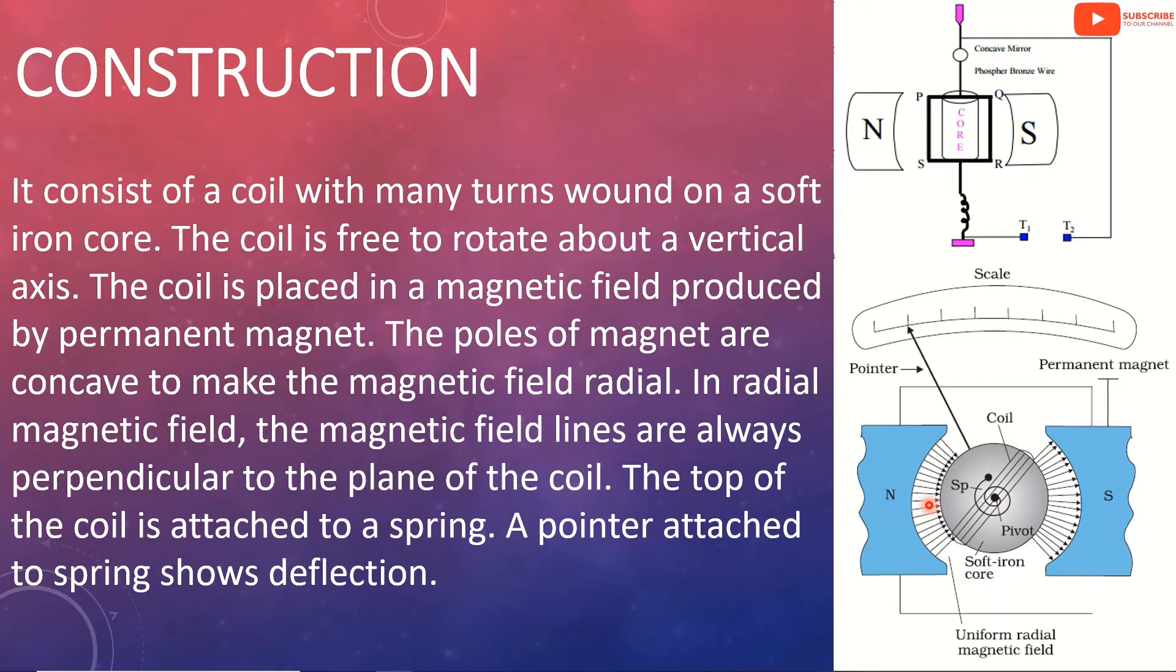It consists of a coil with many turns wound on a soft iron core. The coil is free to rotate about a vertical axis. The coil is placed in a magnetic field produced by permanent magnet. The poles of the magnet are concave to make the magnetic field radial. In radial magnetic field, the magnetic field lines are always perpendicular to the plane of the coil. The top of the coil is attached to a spring. A pointer attached to the spring shows deflection.